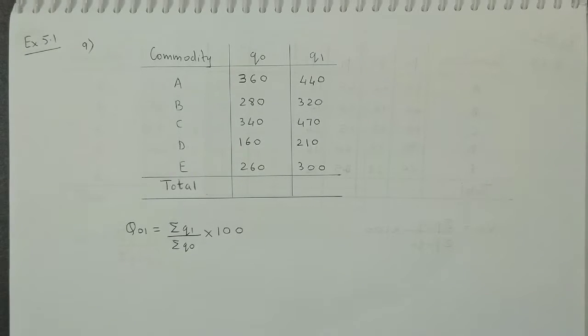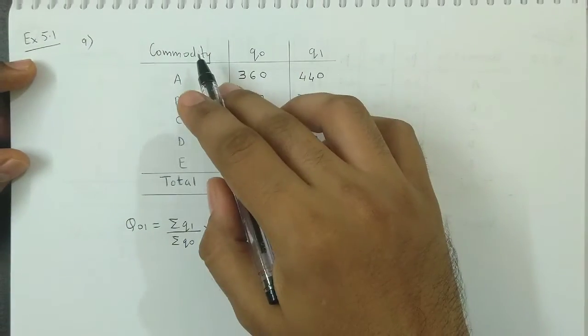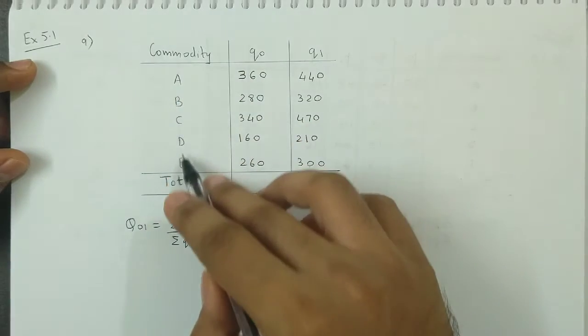We now discuss question number 9 from exercise 5.1. Now we have to calculate quantity index using simple aggregate method. The table is already prepared. The first column is commodity: A, B, C, D, E.